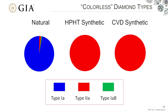Colorless synthetic diamonds that are grown by the HPHT or CVD method are Type 2A diamonds — they don't contain nitrogen. In contrast, 95 to 96% of all natural diamonds are Type 1A diamonds, shown by the blue part of this pie chart.